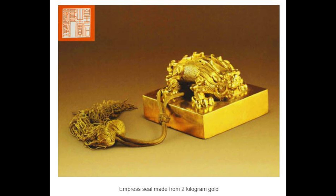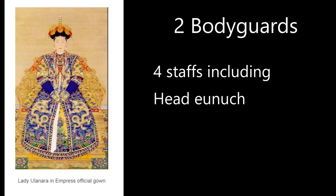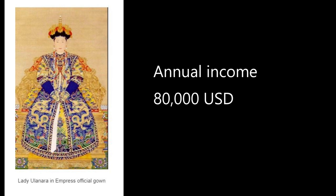If you look at the second picture, you will see the empress seal, made from two kilograms of gold. Hong Hao can have 15 units and four staff from the imperial household department, including one head unit. She also had 30 banner men to serve her, and two official guards follow her everywhere. Her annual income is about $80,000 a year. You might think that's not much, but $80,000 two hundred years ago was a lot of money, so she could actually use a lot.